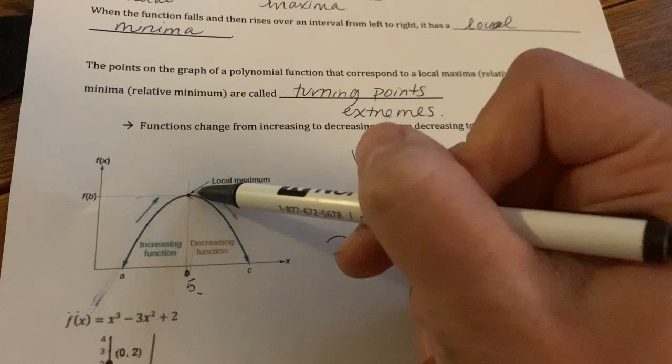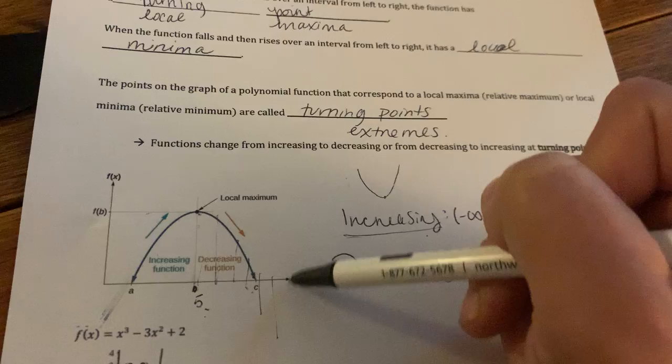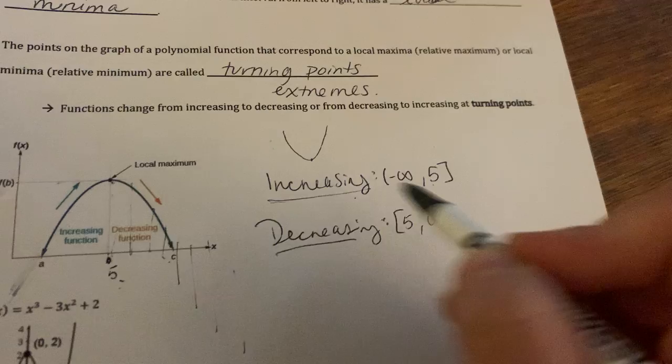And then that means that from five all the way to infinity, you were decreasing. Five, six, seven, eight, nine, ten, eleven, twelve, you're going lower and lower. So you ask for the x values since these represent the y's.